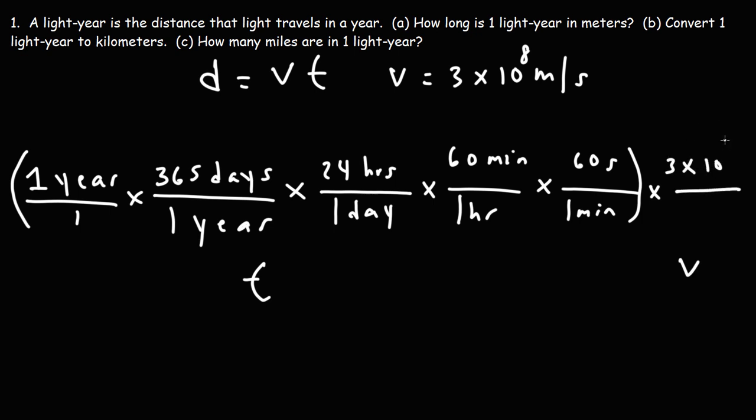We have 3 times 10 to the 8 meters for every second. So notice the unit years cancel, the units days cancel, hours, minutes, and seconds. So we're left with the unit meters. So if we multiply V by T, we're going to get the distance D, and that's going to be in meters.